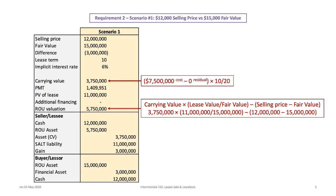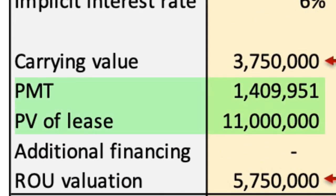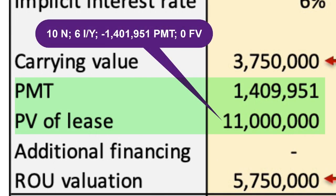From requirement 1, we know the payment is $1,409,951. The lessee takes the lessor's payment and calculates the present value of the minimum lease payments as follows: 10 N, 6 I/Y, $1,409,951 plus/minus PMT, 0 FV, and compute the present value to result in $11,000,000.